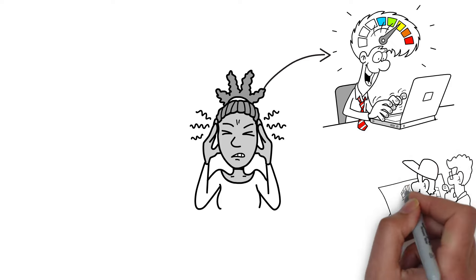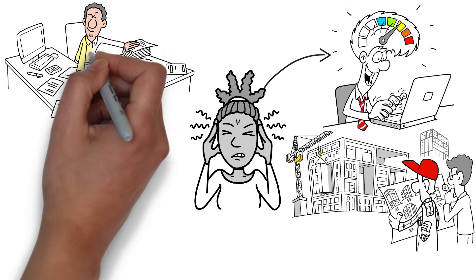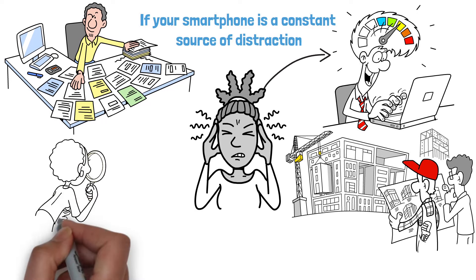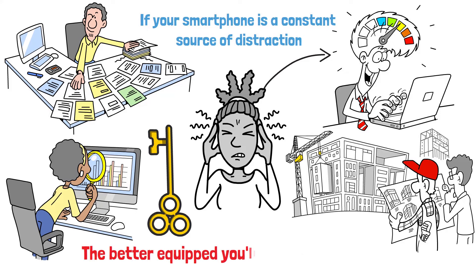For example, if you often procrastinate when faced with a large project, try breaking it down into smaller, more manageable tasks. Or if your smartphone is a constant source of distraction, consider implementing digital detox periods during focused work sessions. Awareness is key. The more you understand your procrastination patterns, the better equipped you'll be to overcome them.